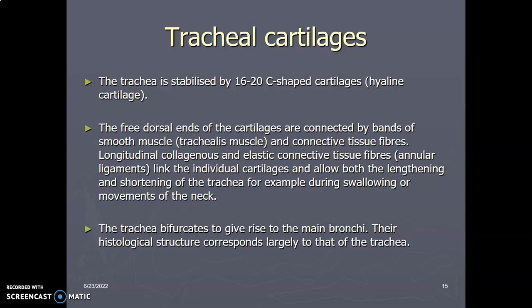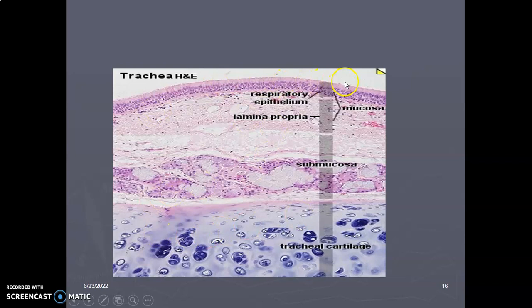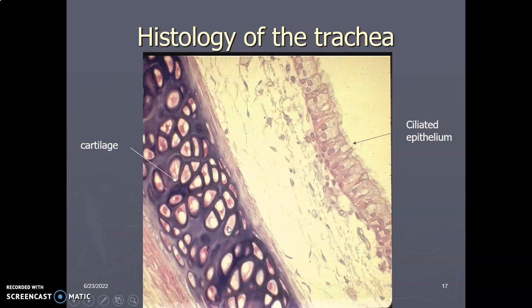The primary bronchi have the same histology as the trachea: epithelium, lamina propria, submucosa, then hyaline cartilage with trachealis muscle complementing it at the back. This slide shows the histology of the trachea — the pseudostratified columnar ciliated epithelium, the lamina propria, the submucosa with submucosal mucous glands, and then the hyaline cartilage. Recall from the cartilage lecture: cells in isogenous groups of two to four, and a clear glassy matrix because collagen type 2 has the same refractive index as the ground substance, making the collagen fibers invisible.